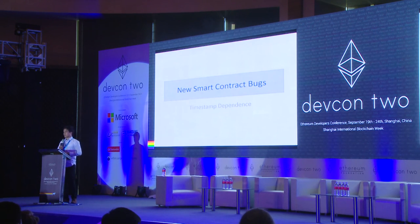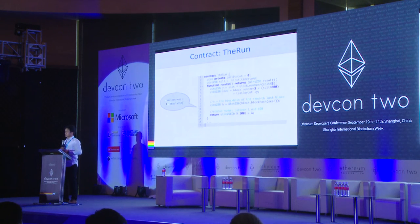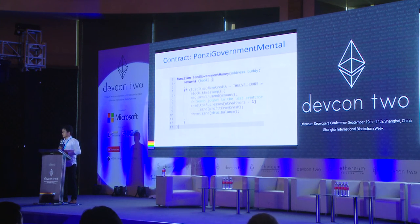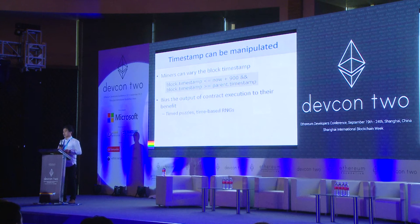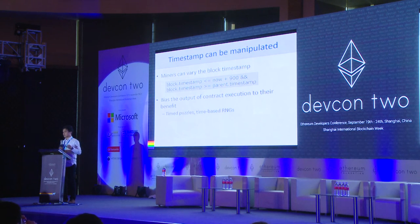The next issue is timestamp dependence. Ethereum allows smart contracts to access the block timestamp within the contract, and we've seen two main use cases: first, people use the timestamp as a random seed to generate random numbers; second, they use the timestamp to simulate real time. The problem with both use cases is that the timestamp can be manipulated — miners can vary the block timestamp to a value that biases the execution outcome in their favor.